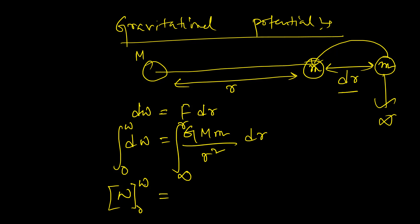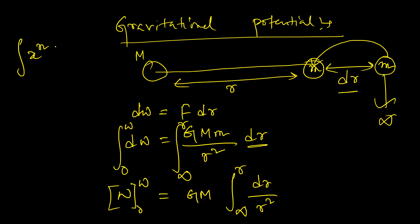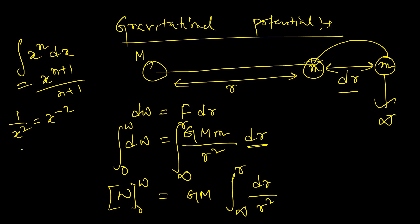Integration of dW equals W — this process is called definite integration, which you will learn in class 12. G and M are constants. The variable is r, so we integrate dr/r² from infinity to r. We use the formula: integral of xⁿ dx = x^(n+1)/(n+1). Since 1/r² = r⁻², in the next step r² is put in the numerator as r⁻².